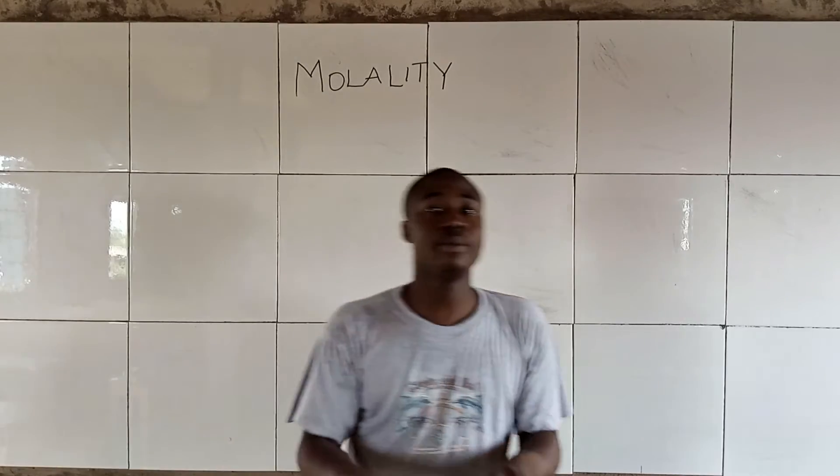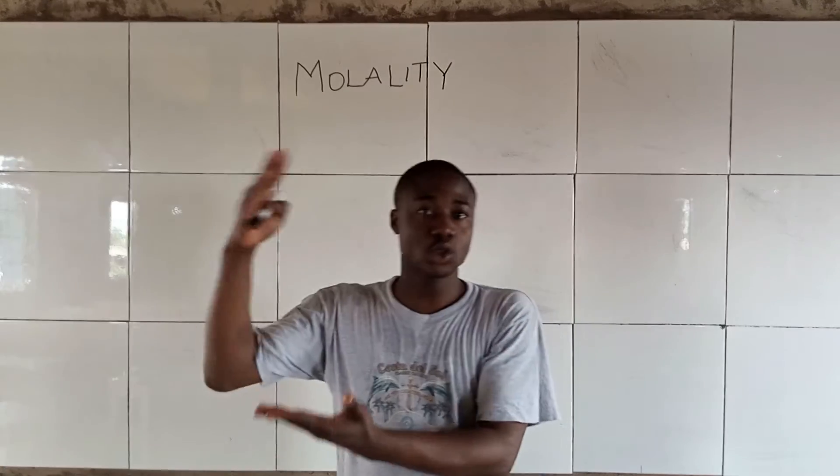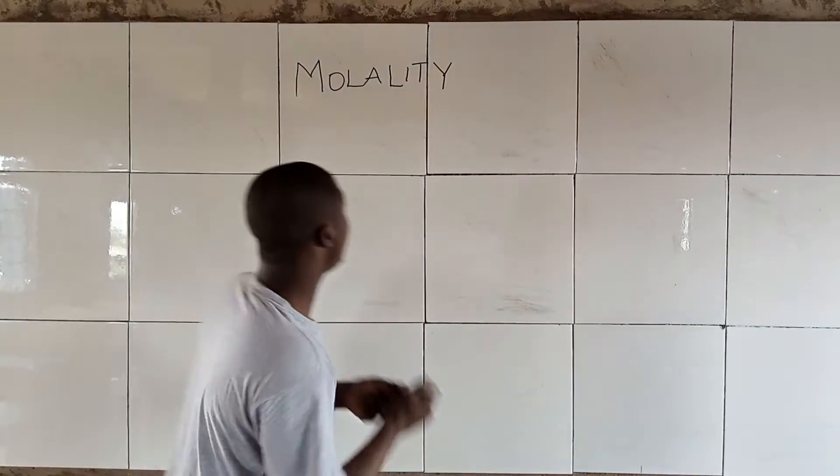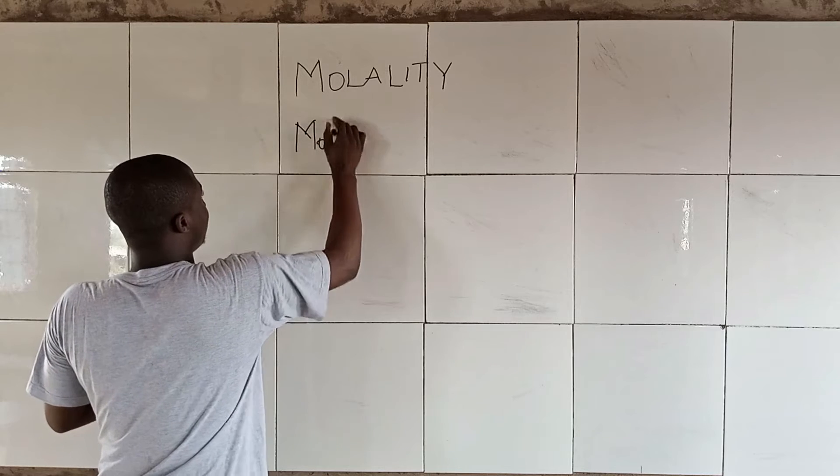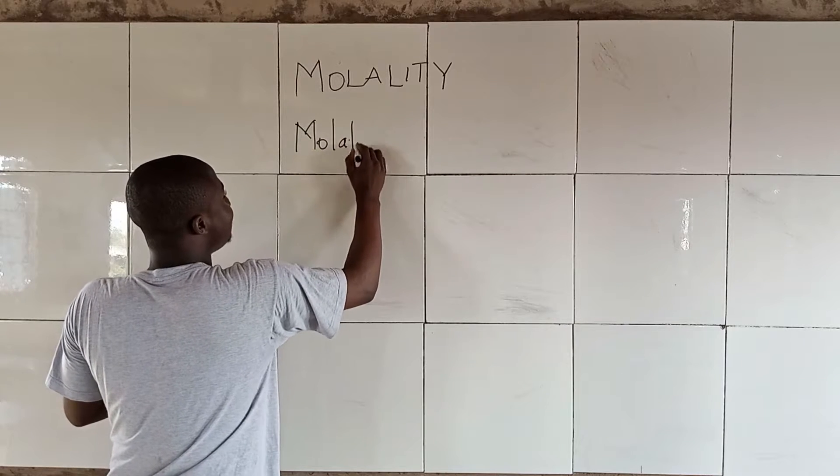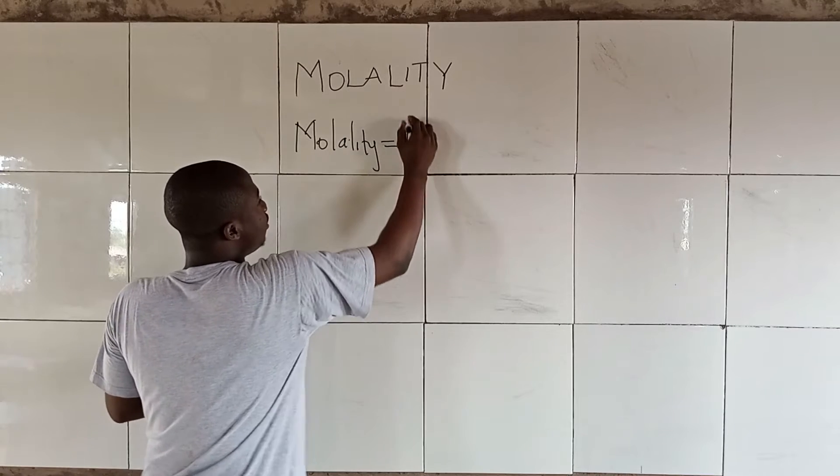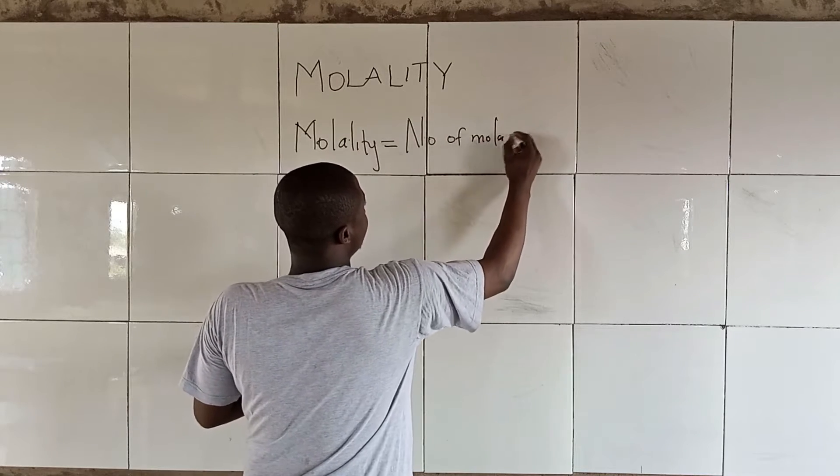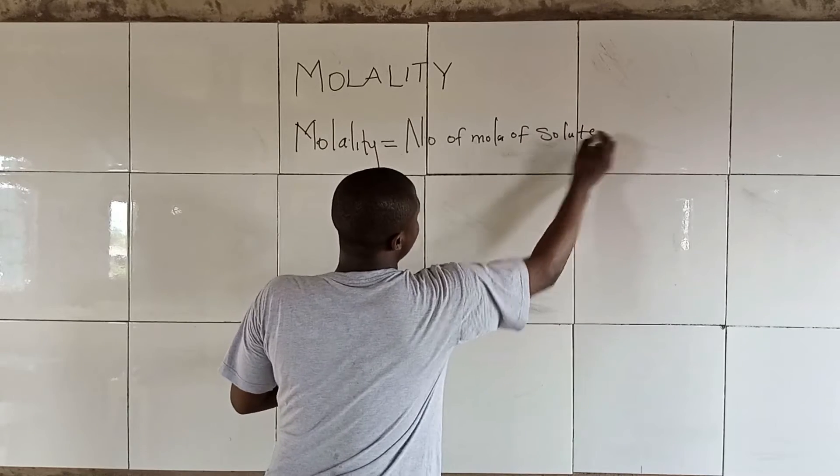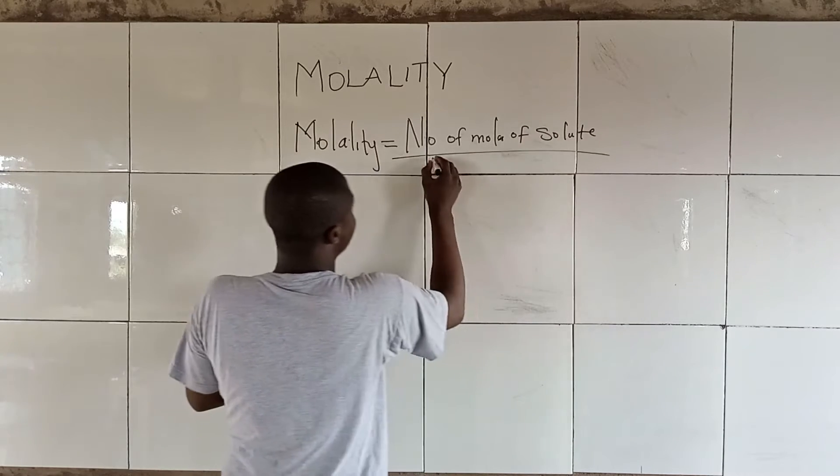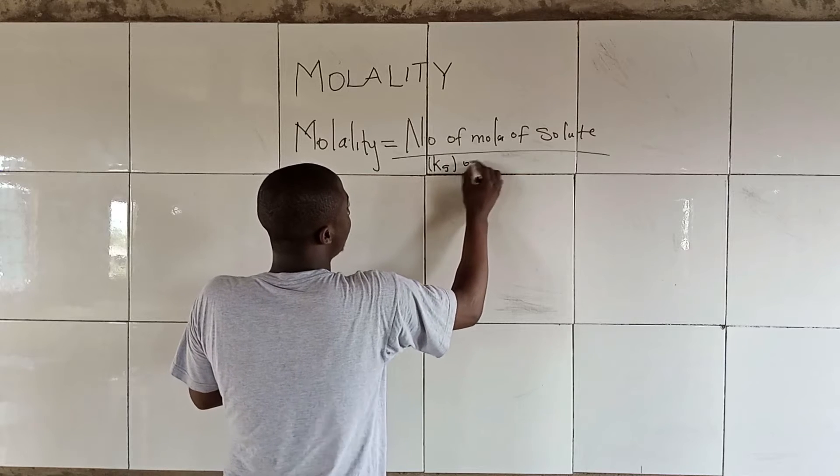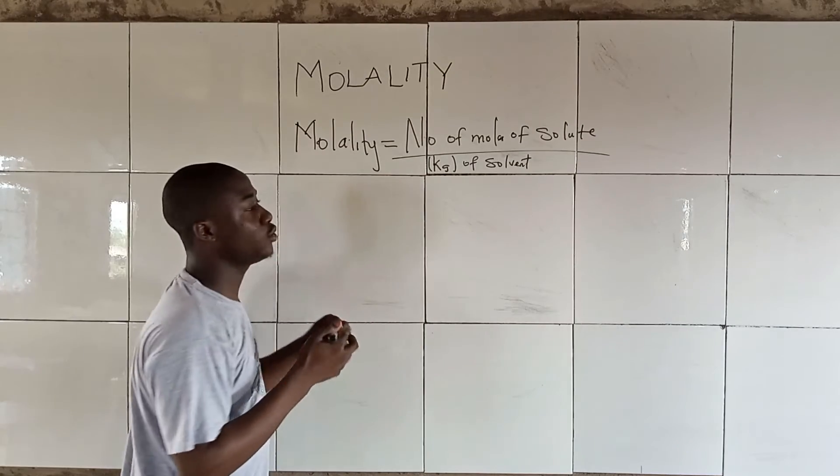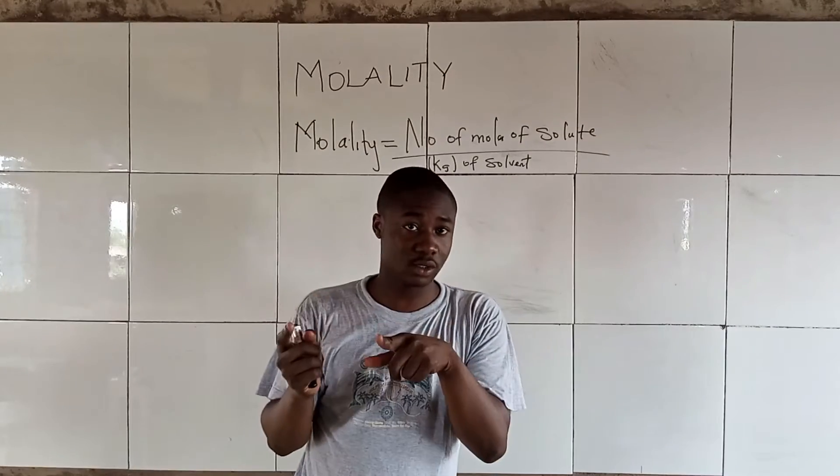Molality is given to be number of moles of solute over kg of solvent. Now, kg of solvent here, we are talking about the mass of the solvent.